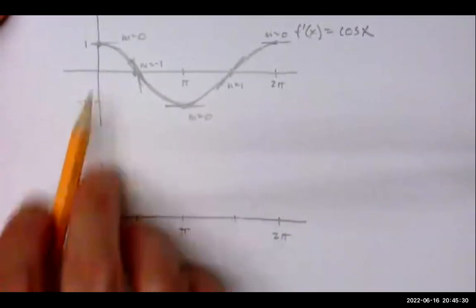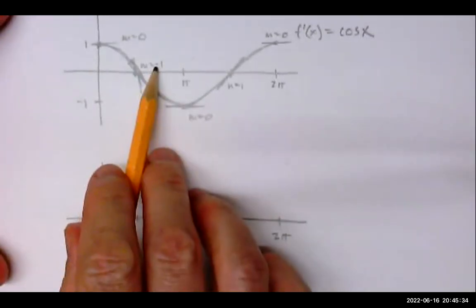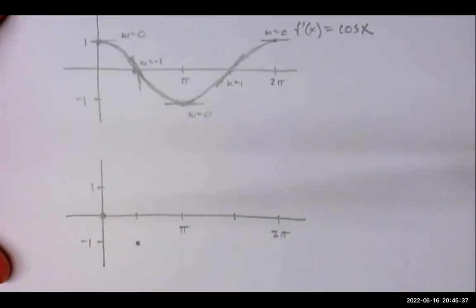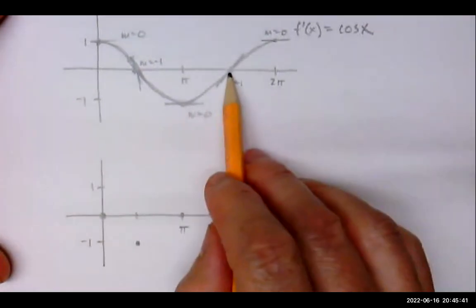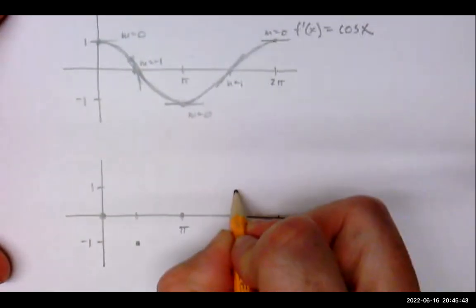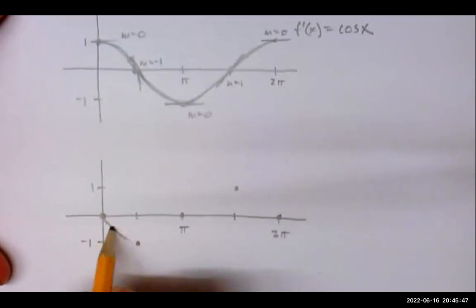At x equals zero we're back to zero, but here we're at negative one. At π we're back to zero, here we're at positive one, and back to zero. Here's what the graph is doing.